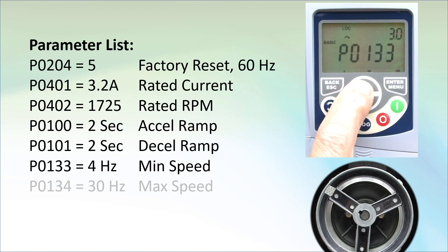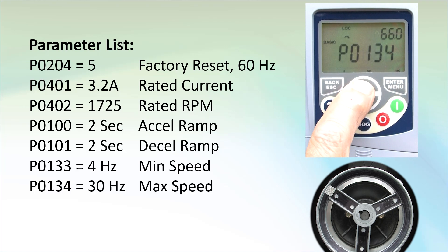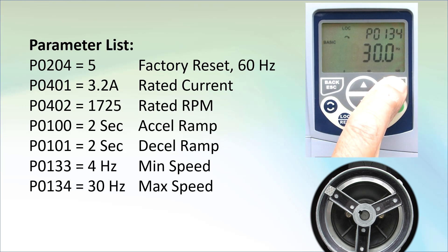Parameter 133 is the minimum speed parameter. Let's make that 4 hertz just to be different. Enter to accept. Parameter 134 is the max speed. Let's limit that to 30 hertz. Enter to accept.